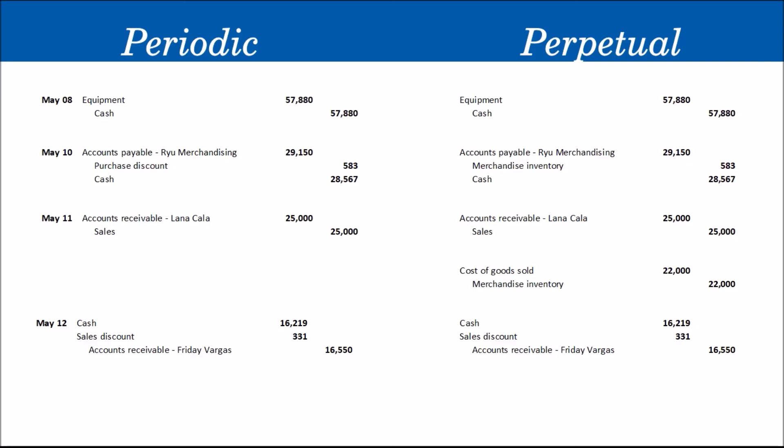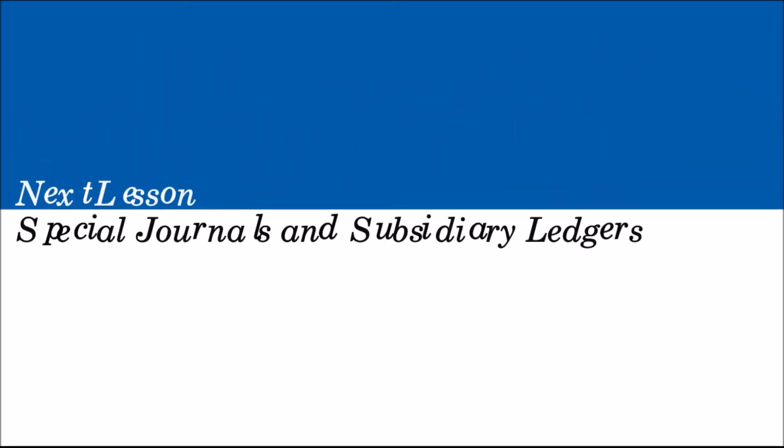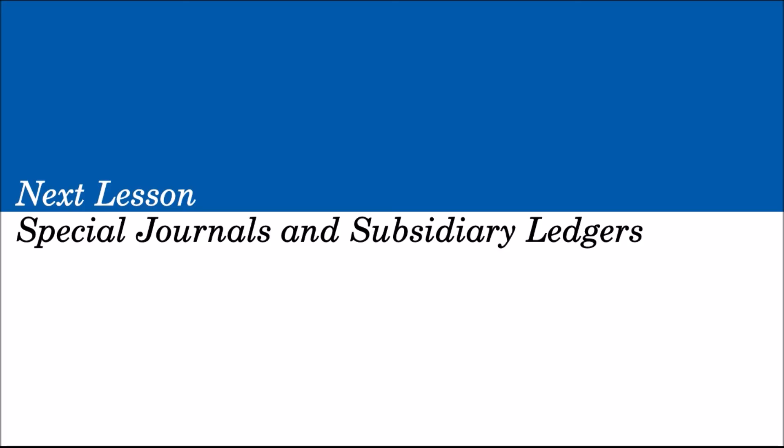For May 25, Lanakala paid her account in full. Her sale was on May 11 with terms 2/10, n/30 — the discount period ended May 21. Since she paid on May 25, she does not qualify for the discount. We simply debit Cash for 25,000 and credit Accounts Receivable for 25,000. This entry is the same under the perpetual inventory system. Our next lesson will be about special journals and subsidiary ledgers. Always remember to seek the Lord's guidance — as Jeremiah 33:3 says, 'Call to me and I will answer you and tell you great and unsearchable things you do not know.' Thank you and have a great day.